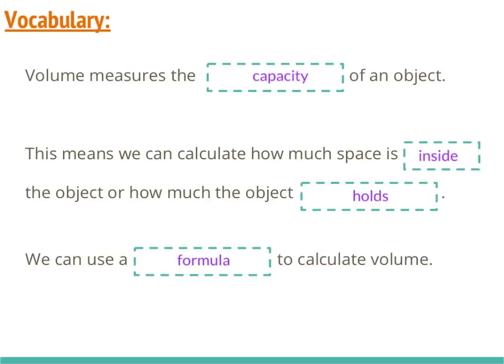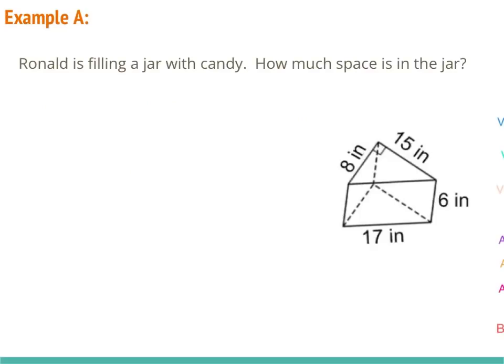Let's take a look at example A. Ronald is filling the jar with candy — how much space is in the jar? We need to determine whether that's going to be surface area or volume by pulling out important information. Since Ronald is filling the jar and we want to know how much space is in the jar, those two things indicate we're talking about volume, because we're talking about filling the shape up.